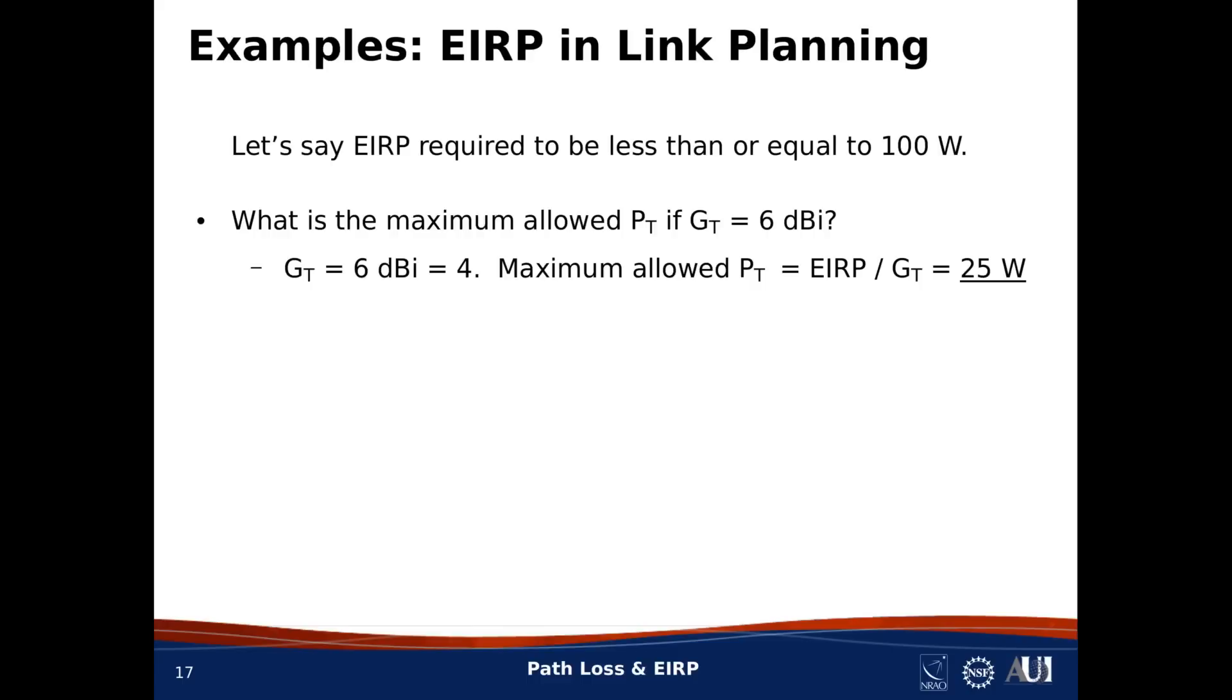Now, if the regulator had instead specified transmit power, you can see that there would be no limit to the power density that we could put into the world. We could just keep increasing the gain of our transmit antenna. By instead upper-bounding EIRP, the regulator now knows the maximum power density that we can create at any distance R, regardless of the antenna that we've decided to use.